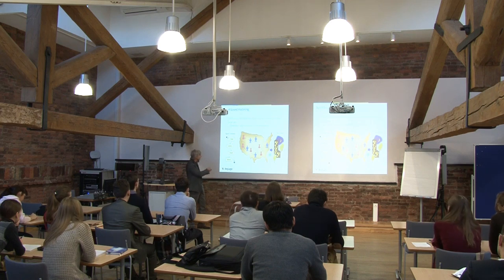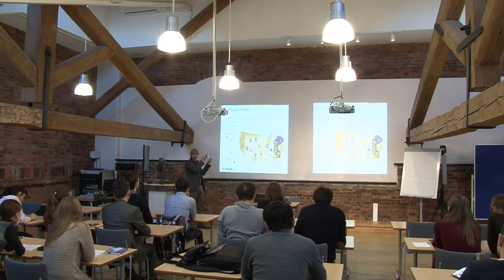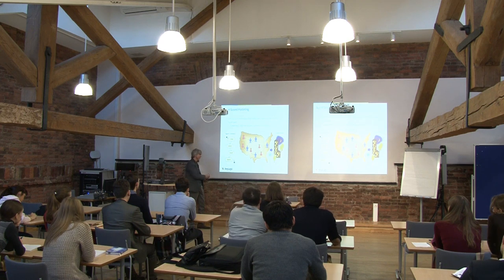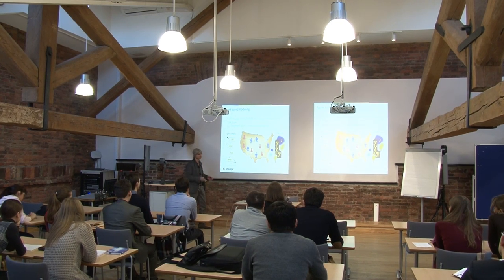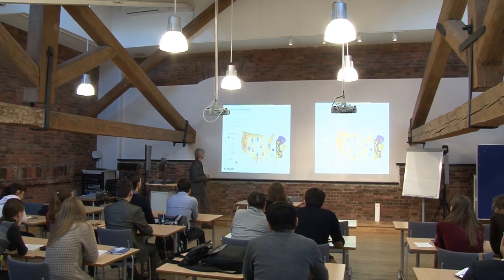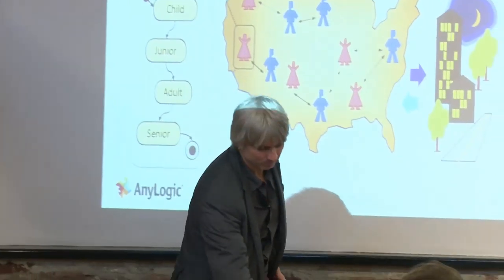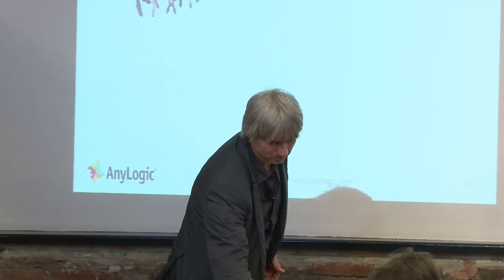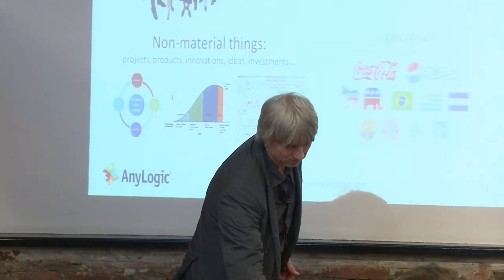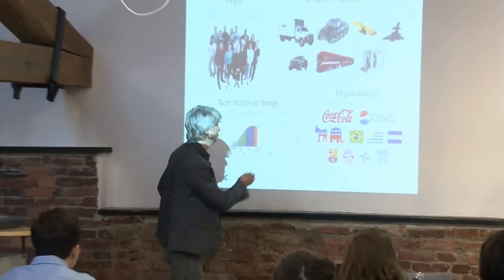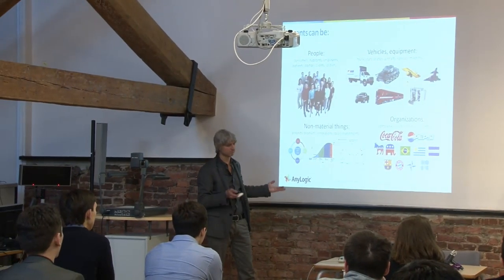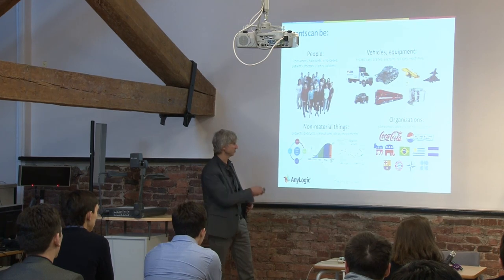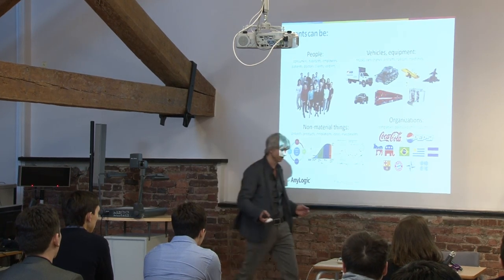That's what agent-based modeling is about. It's a bottom-up modeling approach where you start with: this guy behaves that way, this guy behaves this way — link them and see what happens. Agents can be not only material things but also ideas, projects, innovations, organizations — anything.